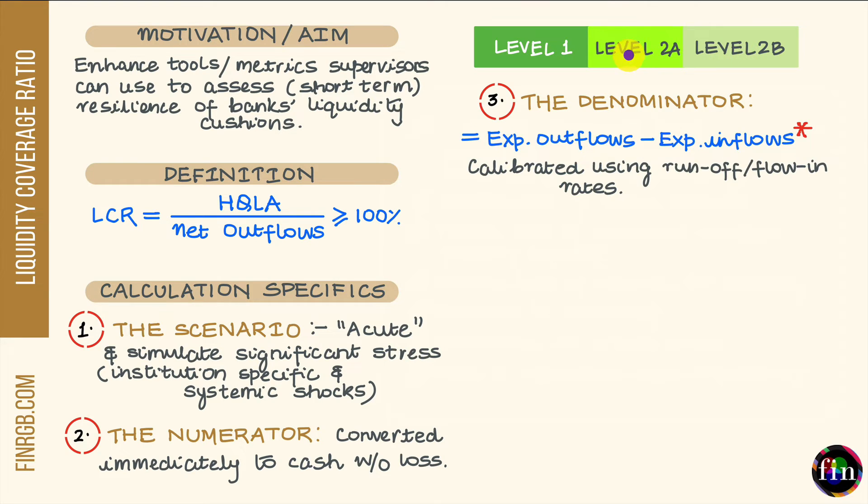Now, the Basel Committee wants to ensure that HQLA is as well diversified as possible with no concentration with respect to any given type of asset. Therefore, we have capping rules with respect to level two and level two B. Your level two assets can be at most 40% of your HQLA. Your level two B assets can be at most 15% of your HQLA.